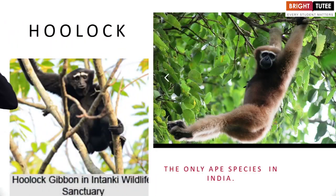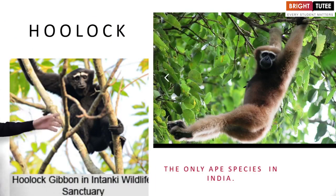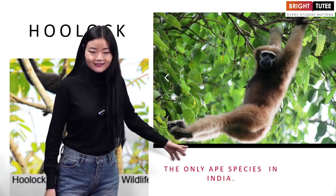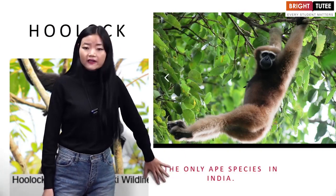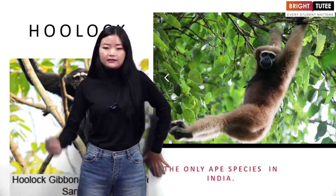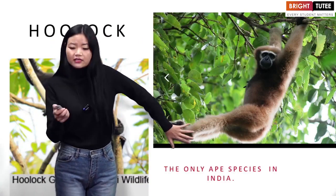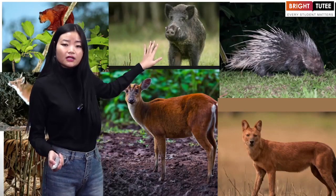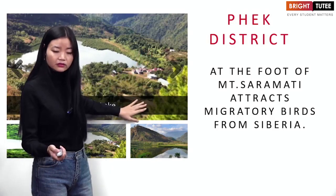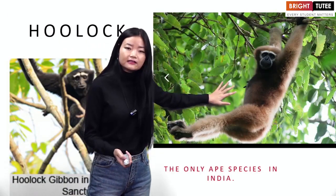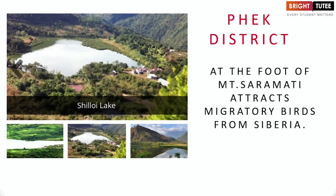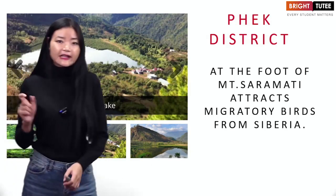The hoolock gibbon is the only ape species in India, and this ape species is found in Nagaland. You will get to see the hoolock in the Intanki Wildlife Sanctuary in Baran. If you want to see how it looks in reality, go visit this sanctuary.